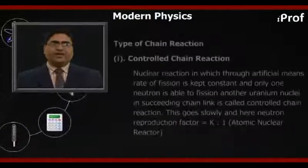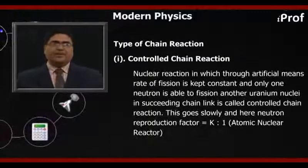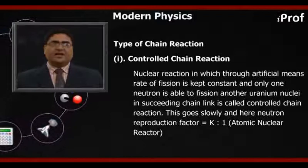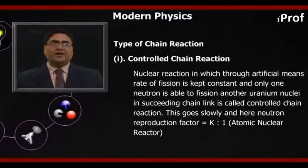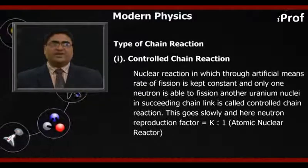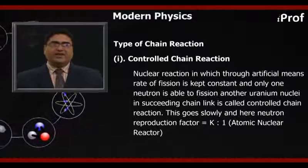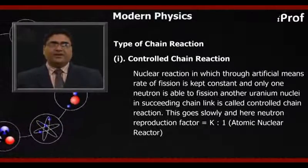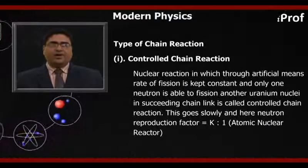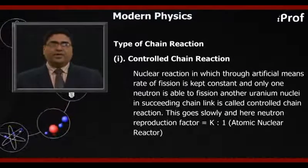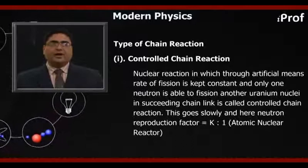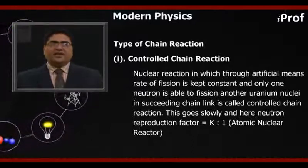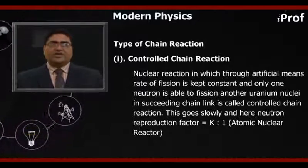Types of chain reaction: There are two types of chain reaction. First is controlled chain reaction, second is uncontrolled chain reaction. Nuclear reaction in which through artificial means the rate of fission is kept constant and only one neutron is able to fission another uranium nucleus in each succeeding chain link is called controlled chain reaction.